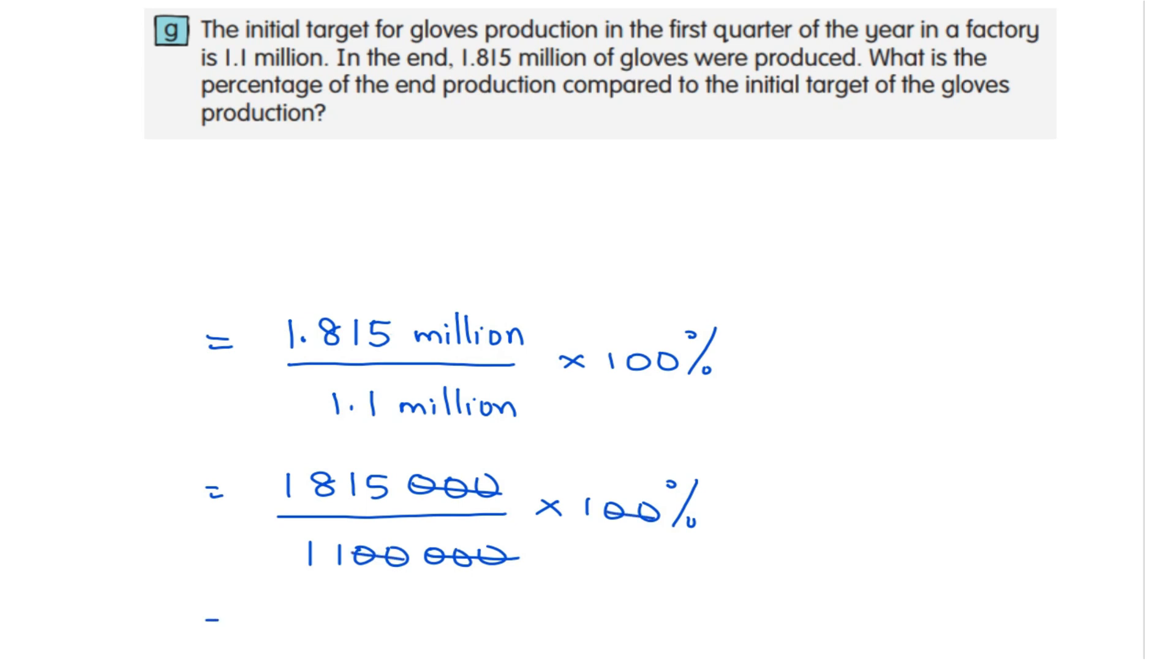We'll have 1.815 divided by 1.1. So 1.815 divided by 1.1. The answer is 165%.